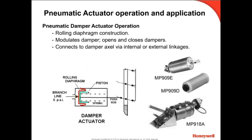Let's first examine pneumatic damper actuators. Damper actuators extend a push rod as increasing control signal air pressure inflates a rolling diaphragm chamber. The rolling diaphragm minimizes friction and wear, providing a very long and trouble-free actuator life. As the rod is extended, a return spring is compressed. As air pressure is decreased, the return spring retracts the push rod.